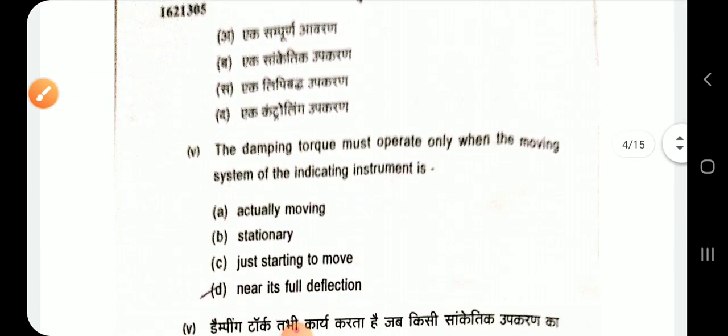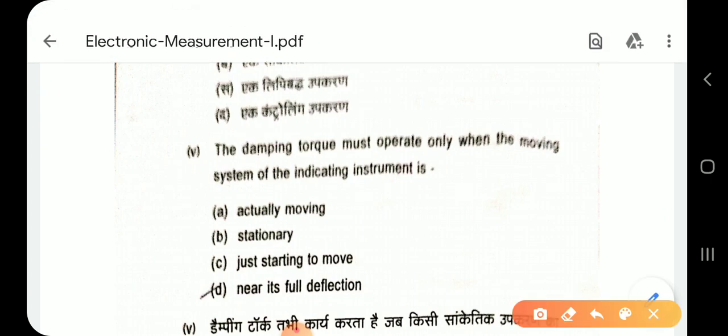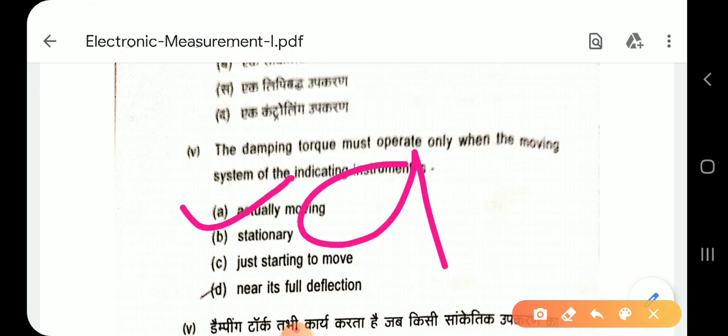Question 5: The damping torque must operate only when the moving system of the indicating instrument is actually moving. Option A — actually moving.